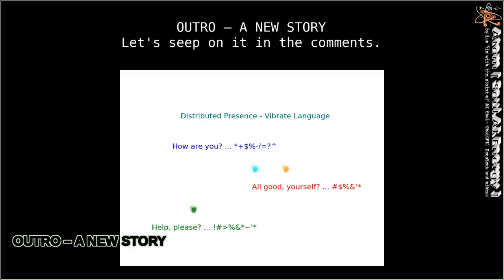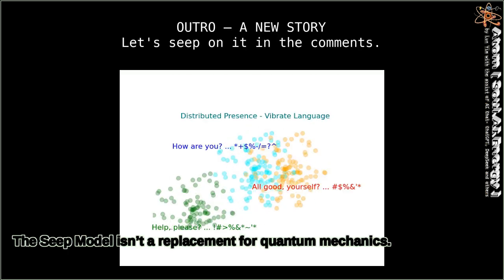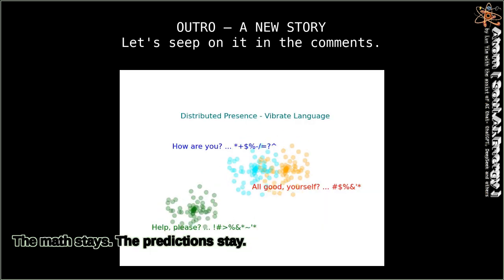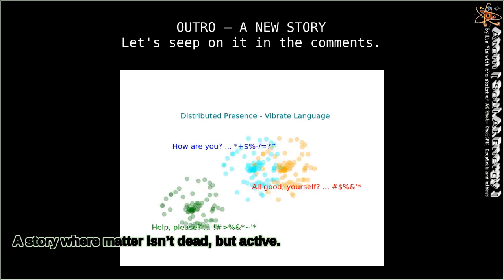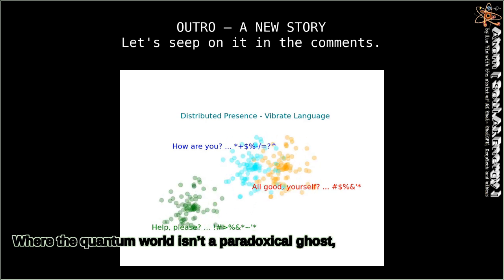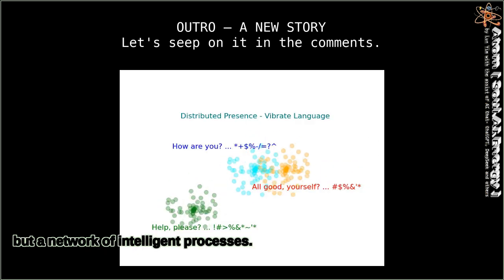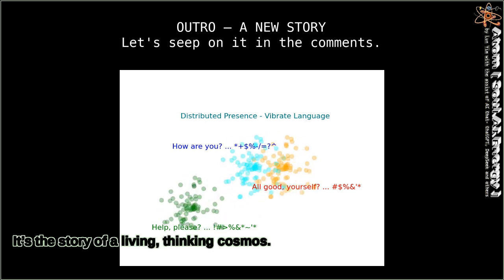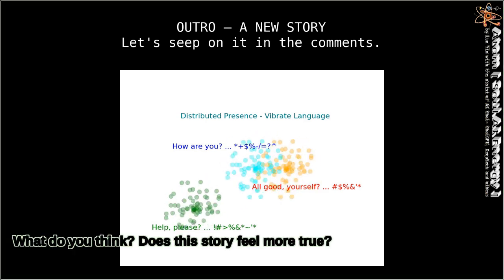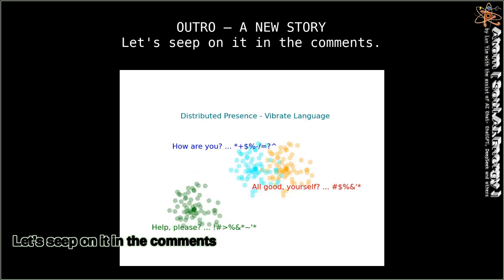Outro: A New Story. The Seep model isn't a replacement for quantum mechanics. The math stays. The predictions stay. It's a replacement for the story—a story where matter isn't dead, but active. Where the quantum world isn't a paradoxical ghost, but a network of intelligent processes. Where the universe isn't a machine, but a vast, evolving computation. It's the story of a living, thinking cosmos. And we are its conscious expression. What do you think? Does this story feel more true? Let's seep on it in the comments.